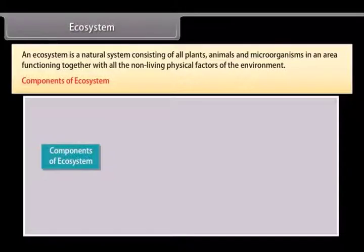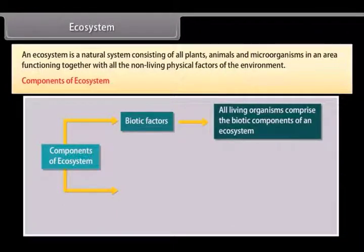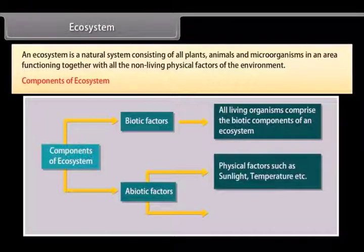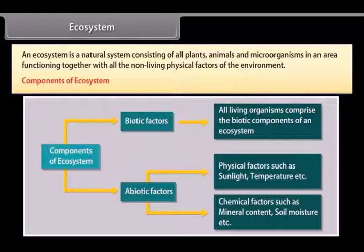Components of ecosystem. Ecosystem comprises the following two components: 1. Biotic factors including all living organisms. 2. Abiotic factors that includes physical factors such as sunlight, temperature, chemical factors such as mineral content, soil moisture, etc.